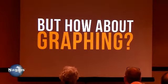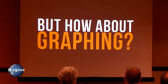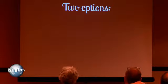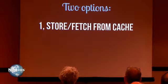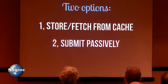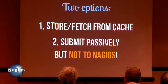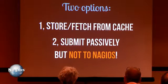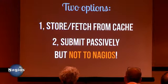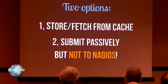For graphing: you can store data in cache and poll it less frequently, or submit it passively. But don't flood Nagios with thousands of OK messages just to draw a graph — send it to Graphite or a data warehouse instead. Graphing data doesn't need to be real-time, so you can collect it once a day or once a week. There are much better ways to transfer metrics data than running checks every five minutes.